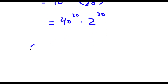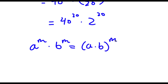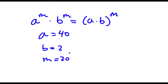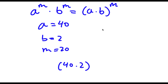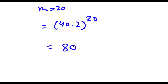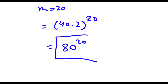Now if I have something in the form a to the power of m times b to the power of m, this can be written as a times b to the power of m. So in this case, a is equal to 40, b is equal to 2, and m is equal to 20. So I have a times b to the power of m, which gives 40 times 2 to the power of 20. Now 40 times 2 is equal to 80. So now I have 80 to the power of 20, and this is actually the most we can simplify this. So 80 to the power of 20 is our answer.